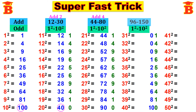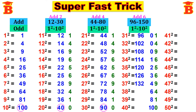Next step: write numbers from 96 to 150 by adding 6. Take the last number without the unit digit — that is 90. Add 6 to get the first number 96. Then continue adding 6: 102, 108, 114, 120, 126, 132, 138, 144, 150.